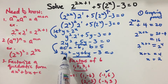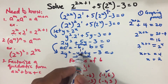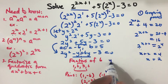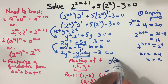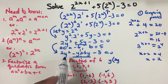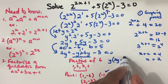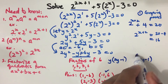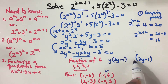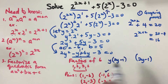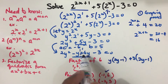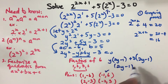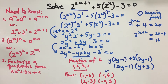Now factorize by grouping. From the first two terms 2y squared minus y, factor out y to get y times 2y minus 1. For the last two terms 6y minus 3, factor out 3 to get 3 times 2y minus 1. So the fully factorized form is 2y minus 1 times y plus 3 equals 0.